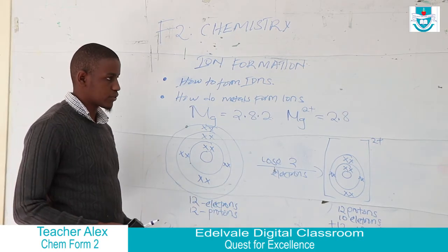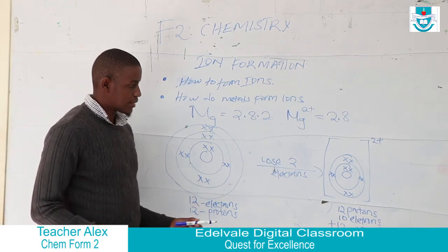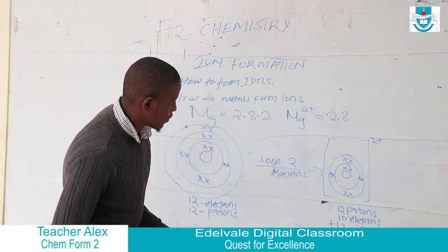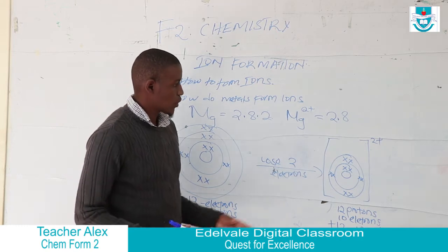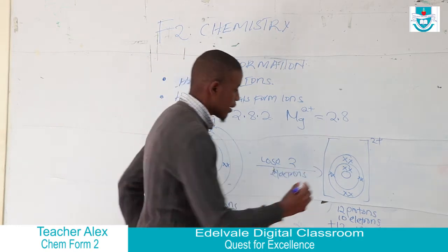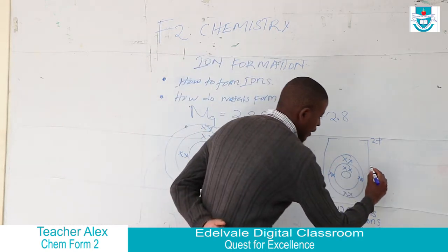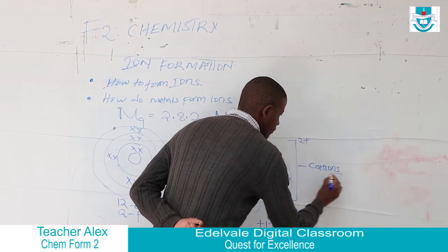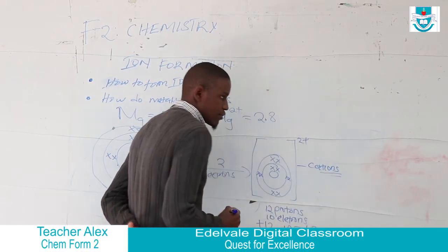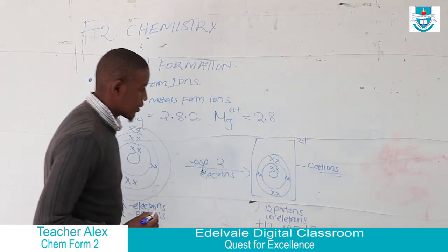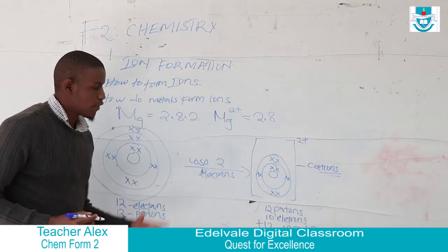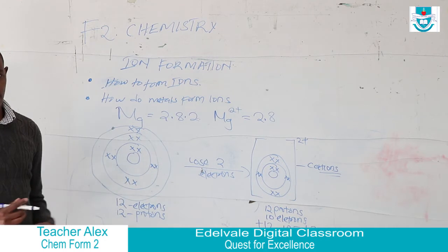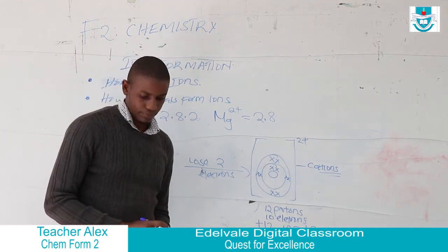When metals lose their outermost electrons, we call these ions cations. Cations are positively charged ions.